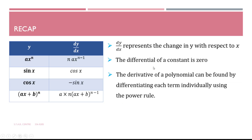To recap some of the things we did in the last video on basic derivatives: we learned the power rule, which is when we are differentiating something of the form ax to the power of n, it gives n·ax to the power of n minus 1. We bring the n to the front, multiply by the constant a, and subtract 1 from the power.